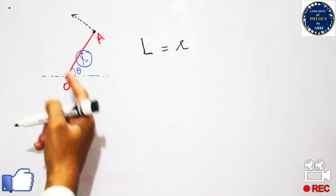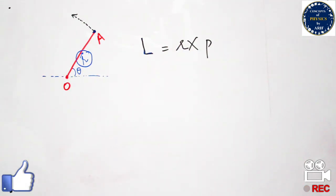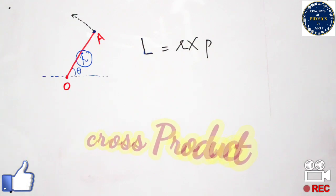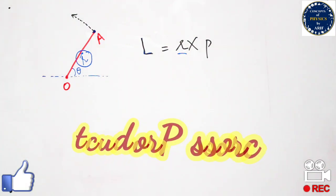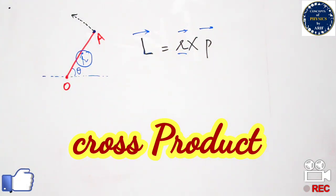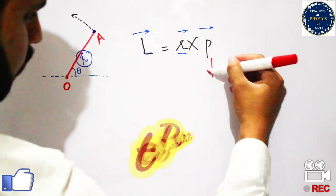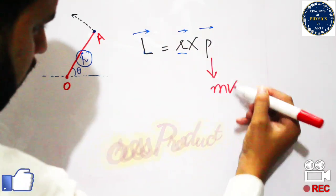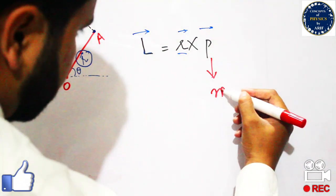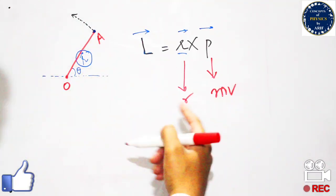Angular momentum is the cross product of position vector r and linear momentum p, where p is linear momentum and r is the position vector. Since both are vector quantities, angular momentum is also a vector quantity. Furthermore, linear momentum p equals mass m multiplied by velocity v.